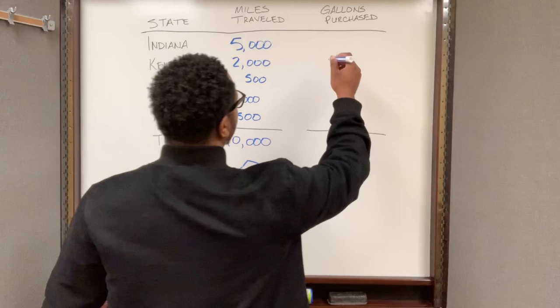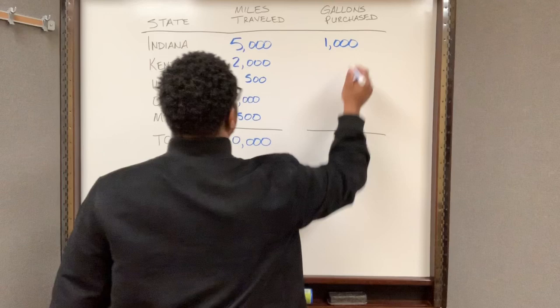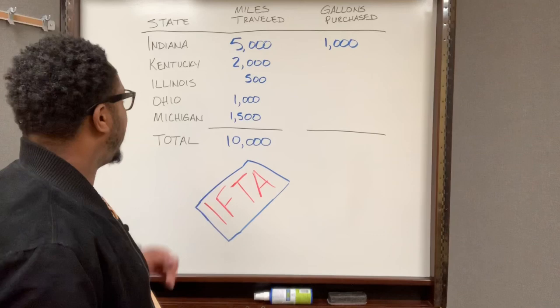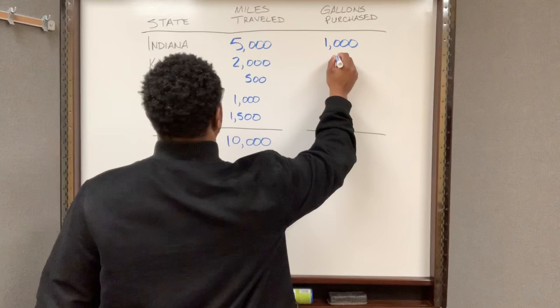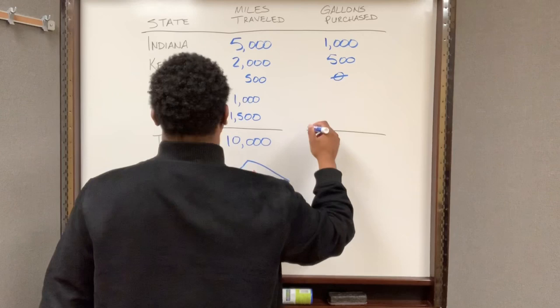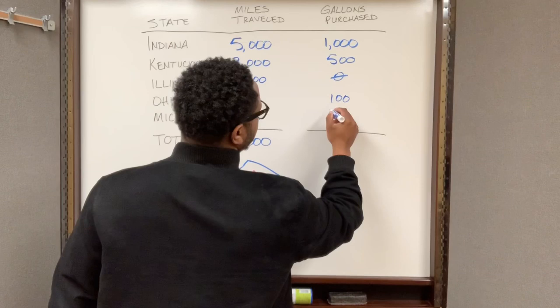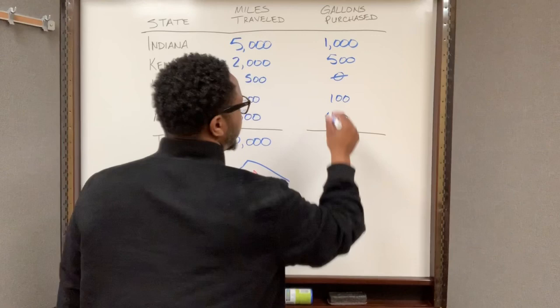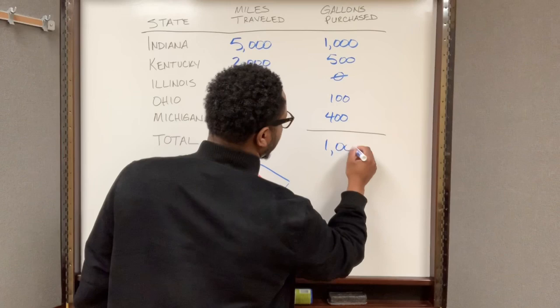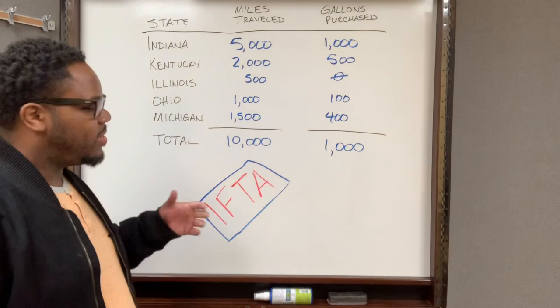Let's say the number of gallons purchased in Indiana were 1,000. Then I go on to each other state with fuel receipts and do the same thing. Kentucky maybe 500, Illinois I may not have any receipts for, Ohio could be 100, and Michigan for example could be 400. So the total gallons purchased would be 2,000.